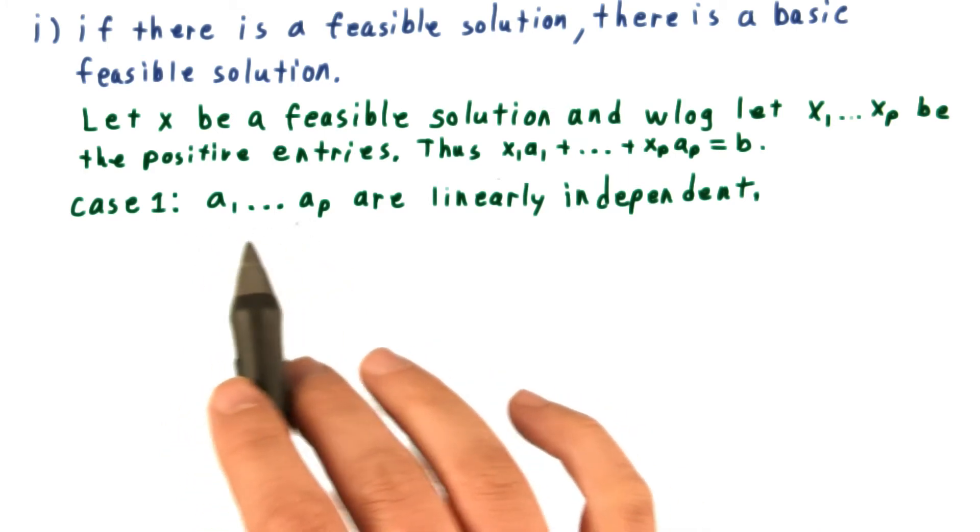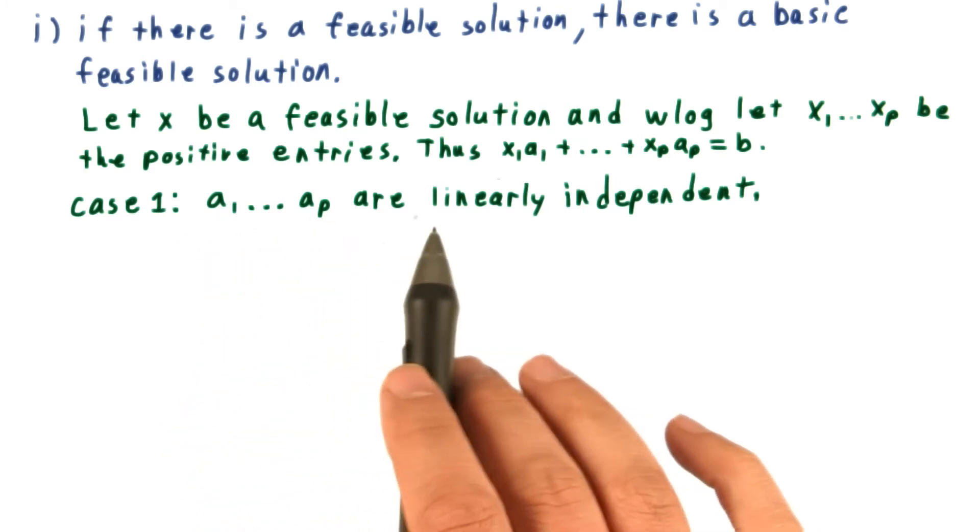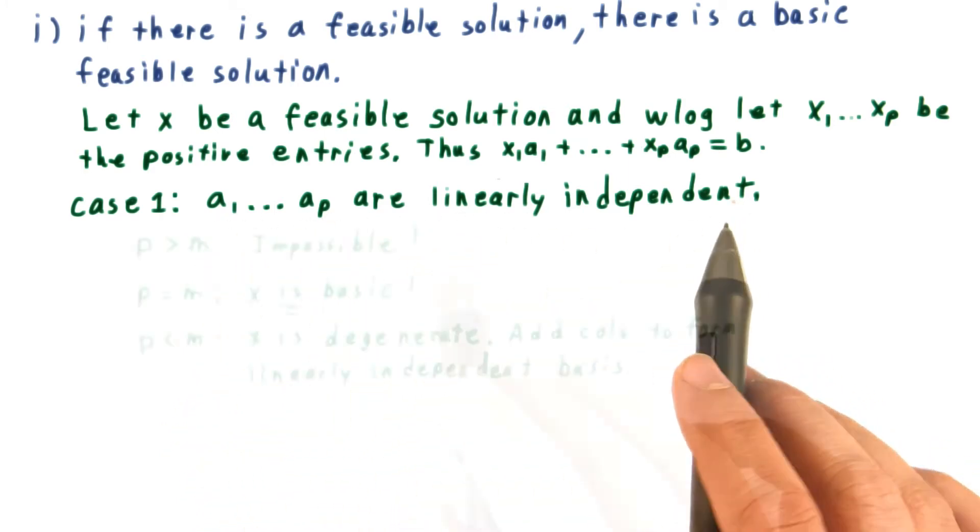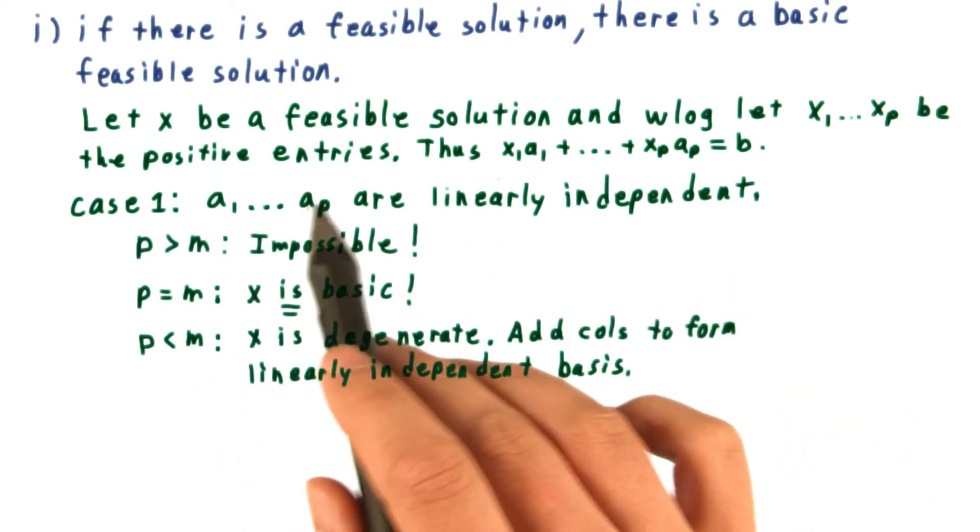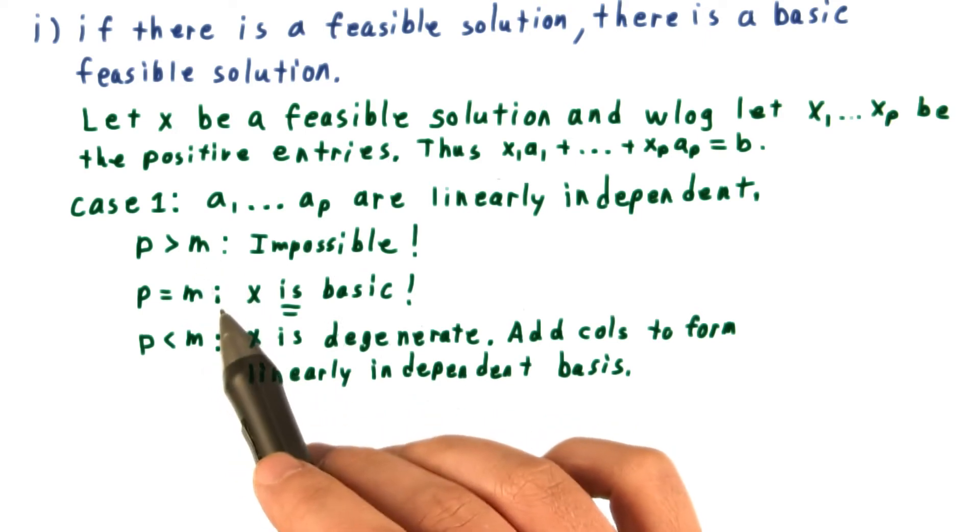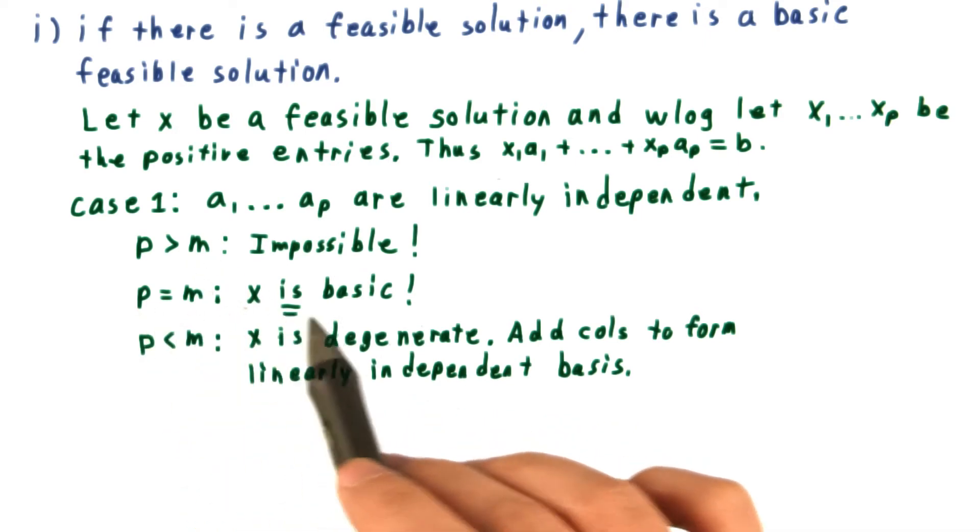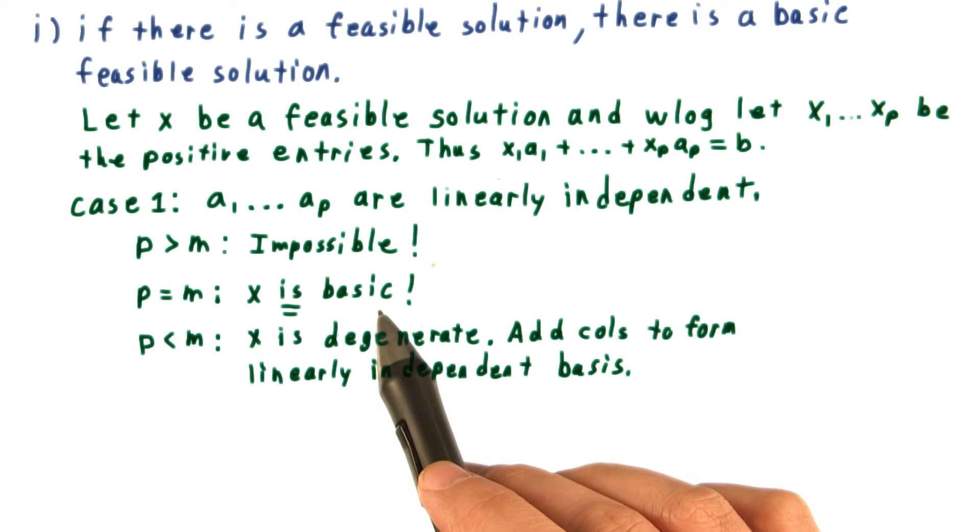First, suppose that the columns A1 through Ap are linearly independent. Then it's not possible that p should be greater than m. Recall that these vectors are only m elements long. If p is equal to m, well then x is basic already, and we're done.